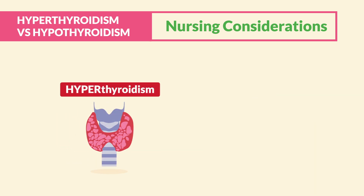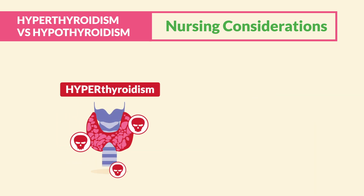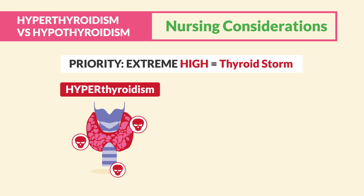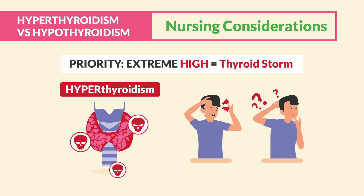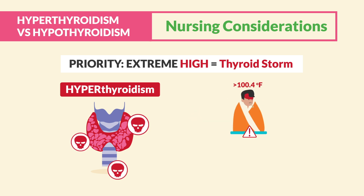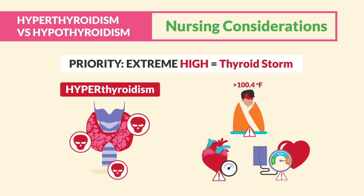For hyperthyroidism, the safety consideration is to watch out for extreme highs — that thyroid storm, which can kill first. For thyroid storm, agitation and confusion are the earliest signs — be sure to write that down. Also watch for extremely high temperatures, high heart rate, and high blood pressure. This will kill our client.